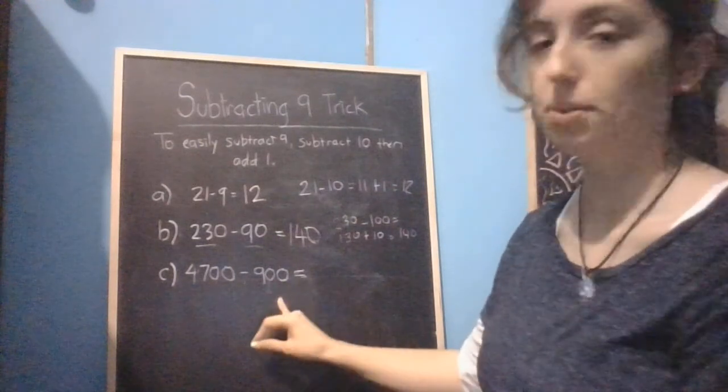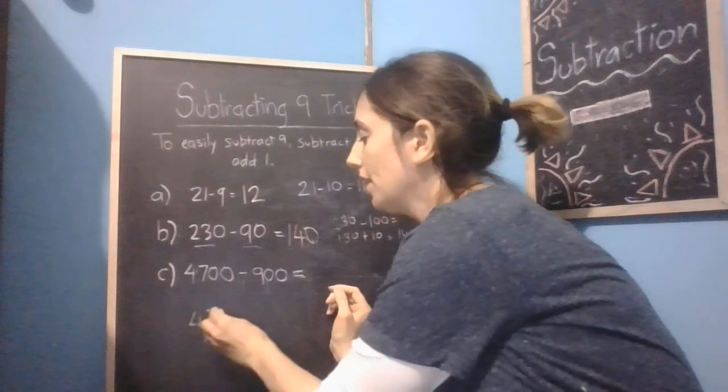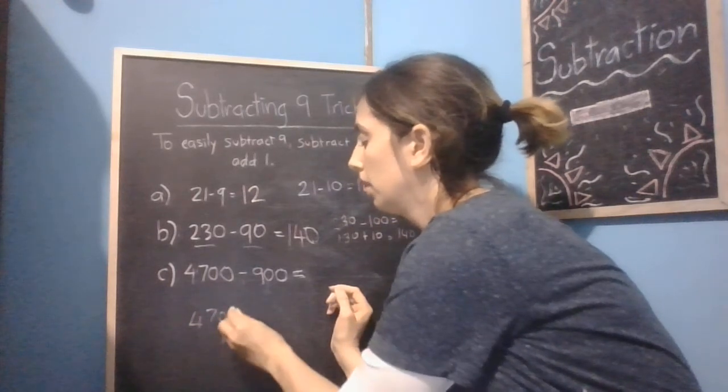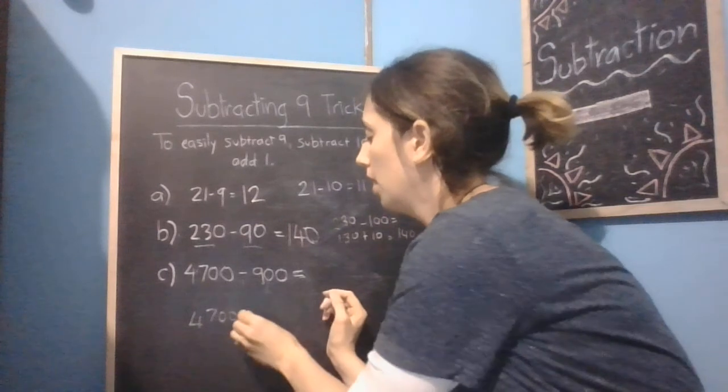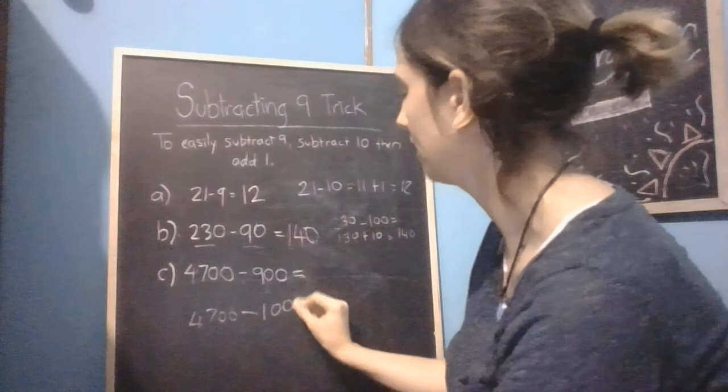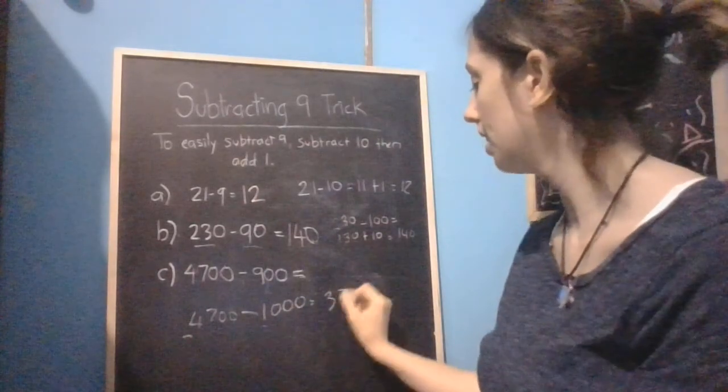So we're actually going to round this one up to 1,000. Did you get it? So we've got 4,700 minus 1,000, which gives us 3,700.